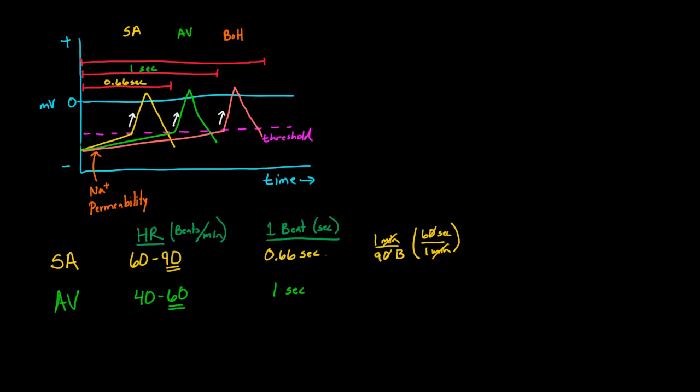Finally, for the bundle of His, the bundle of His is going to be somewhere between 20 to 30 beats per minute. If we use the number 30, that means that you get a beat every two seconds. So every two seconds, this will go off. I know that my picture now, since you know those numbers, it's not going to look as impressive because I should have drawn the bundle of His even more stretched out than it is. But just assume that that's two seconds on that graph.